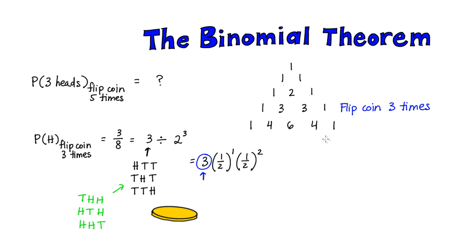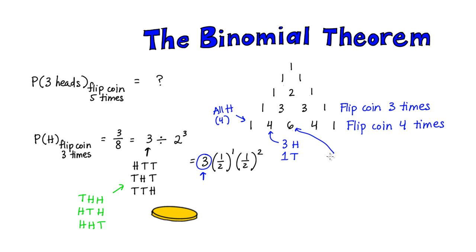This is a pretty complicated concept, so let's keep practicing. This row corresponds to flipping the coin four times. This is the number of ways we can get all heads or all tails. This is the number of ways we can get three heads and one tail. This is the number of ways we can get two heads and two tails, since we're flipping the coin four times. There are four ways we can get one head and three tails. Notice that the triangle is symmetrical — there's a four here and a four here. We can get three heads and one tail in the same number of ways as one head and three tails.